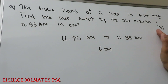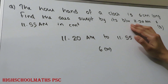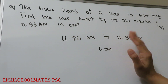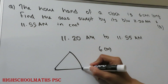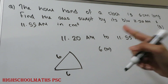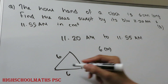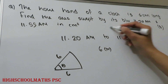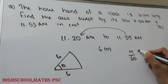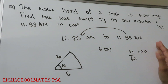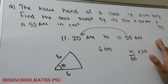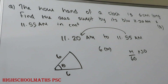Now try a similar practice question: find the area swept by the hour hand between 11:20 am and 11:55 am in cm², given the hour hand is 6 cm long. The method is the same — find the time difference, convert to hours, multiply by 30 degrees to get θ, then apply the area of sector formula. Please follow this method. If you have any questions, leave a comment. Please like and share with your friends.